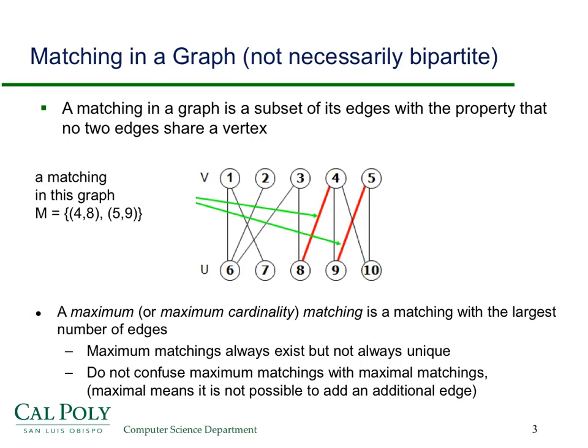So now we can talk about the problem itself that we want to solve using network flows. A matching in a graph is a subset of the edges with the property that no two edges share a vertex. In this picture, the red edges are a matching, and they match 5 to 9 and 4 to 8. So this is a matching of cardinality 2.